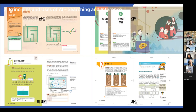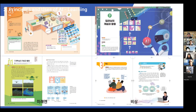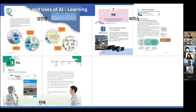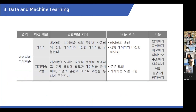Then they learn searching algorithms and inferences. The most important part is learning — in this section, they learn how AI can learn the world and how they can train AI.